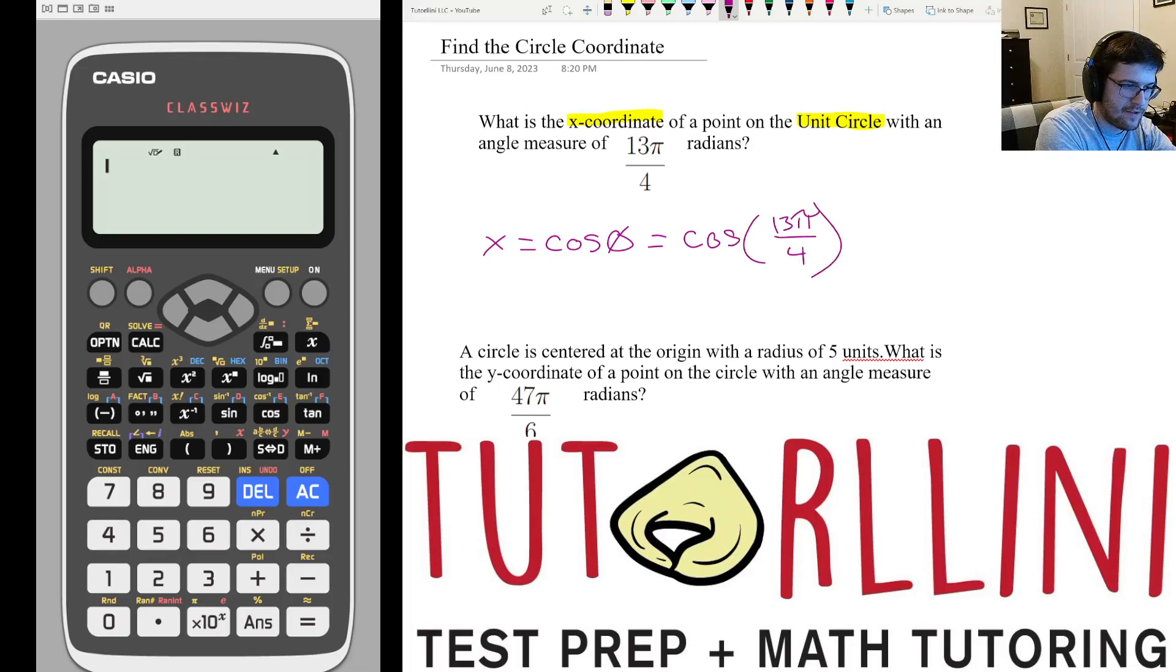So instead of going and typing in and figuring out where it is in the coordinate plane and drawing a special right triangle, I can do this to make the process go a lot faster. Just make sure you're in radians, which I believe I still am. We're going to put cosine of 13 pi over 4 is negative root 2 over 2. So that would be our answer for that one.